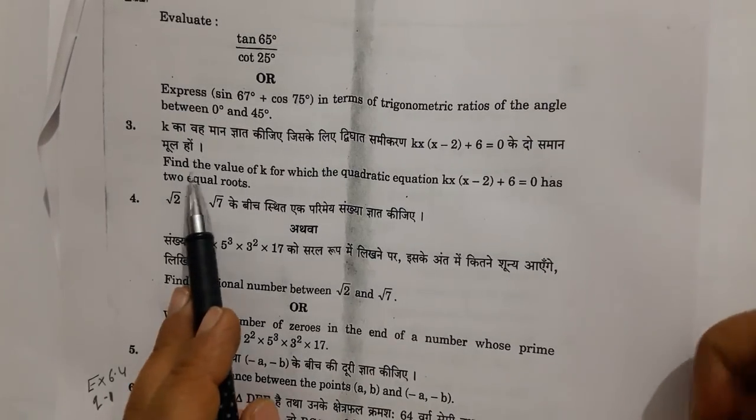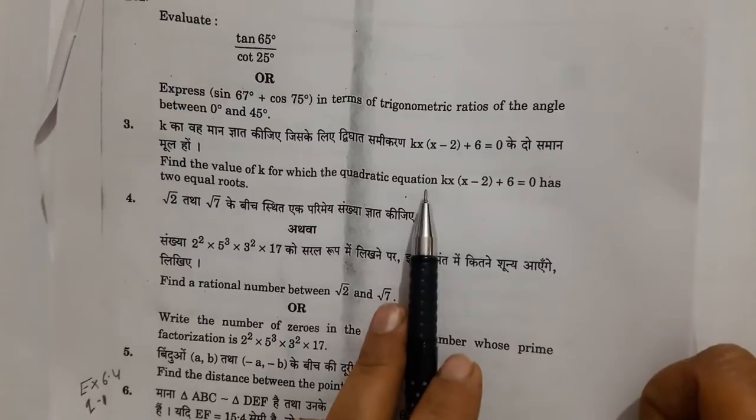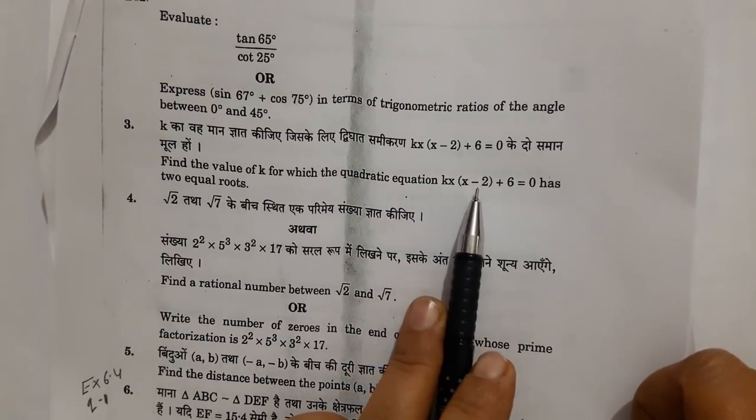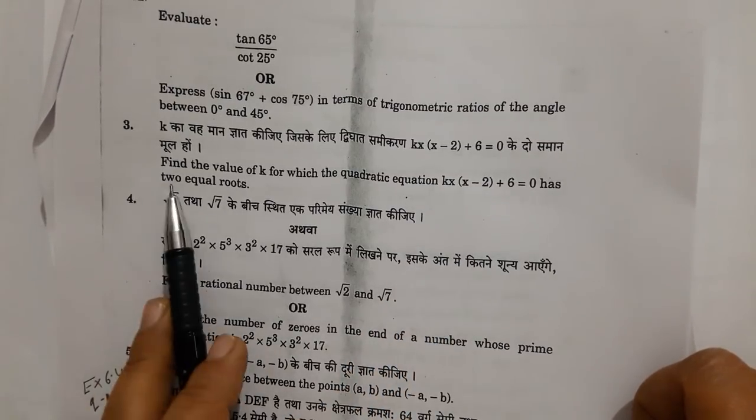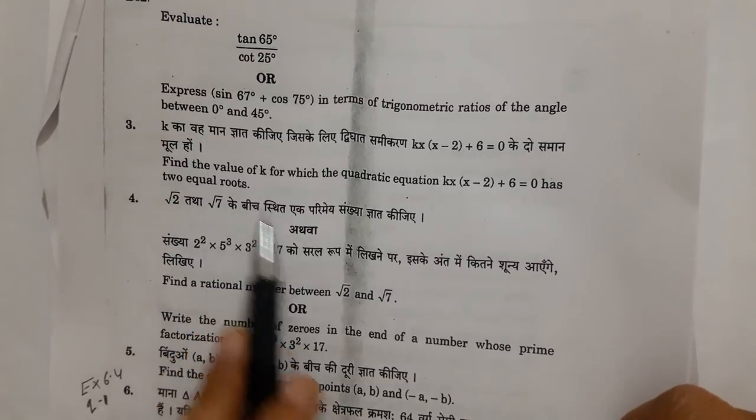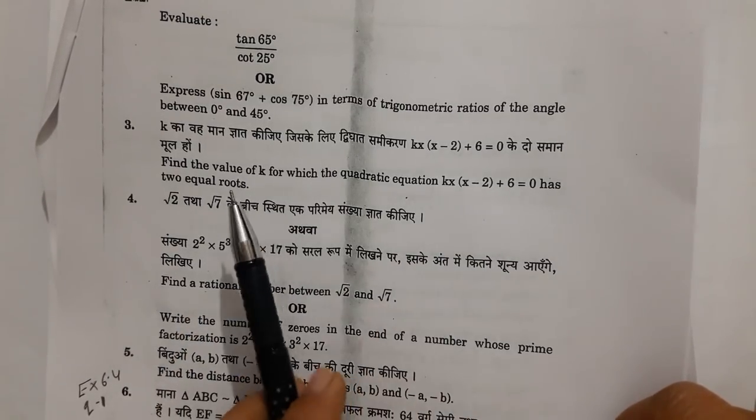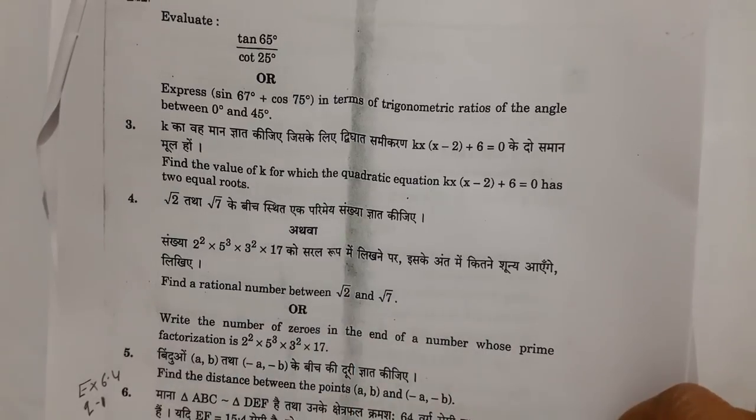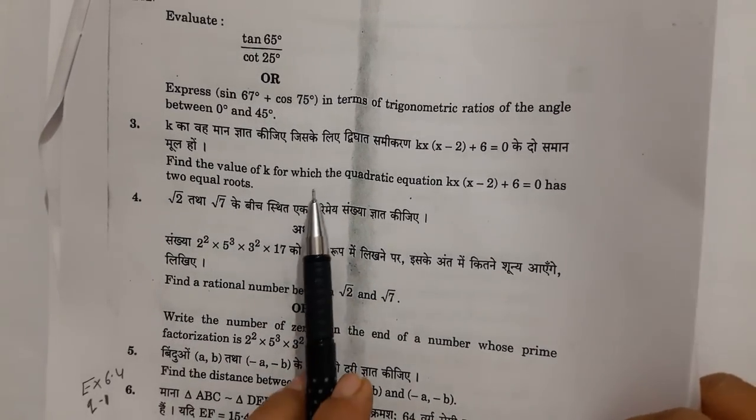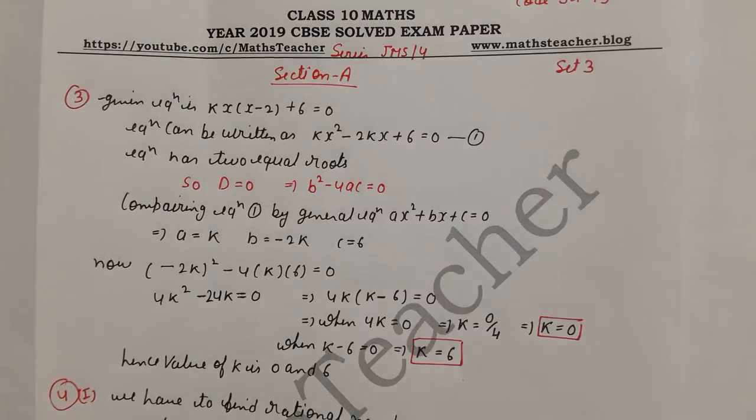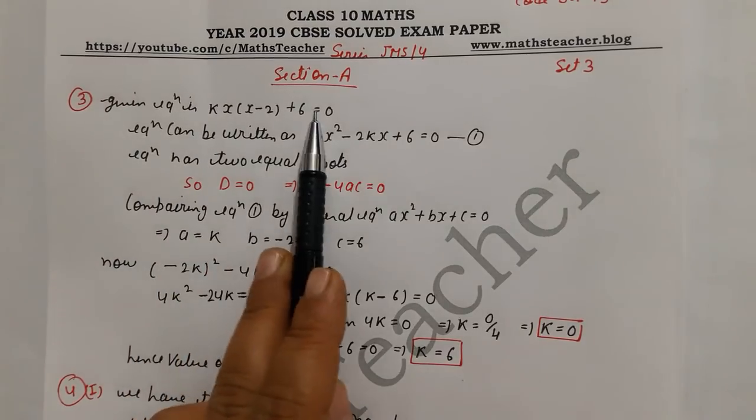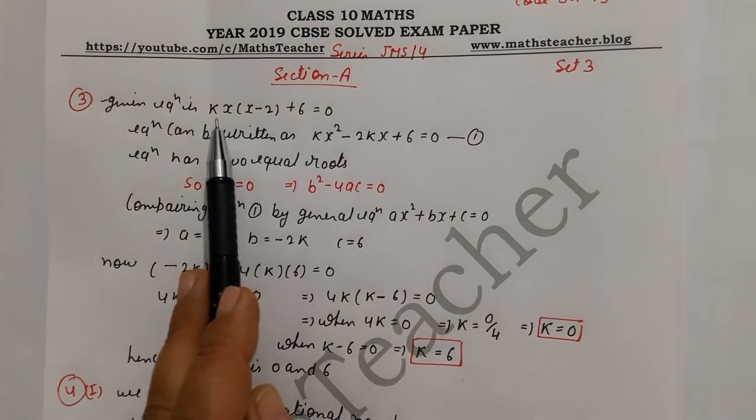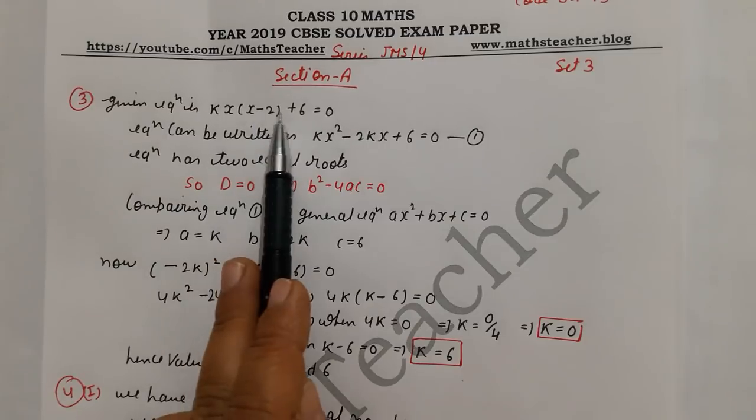Next, question number 3: find the value of k for which the quadratic equation k(x - 2) + 6 = 0 has two equal roots. We have to find the value of k. In the first set there was the same type of question. This is your given equation, but this is not in quadratic form.